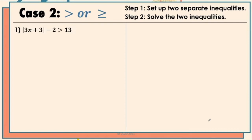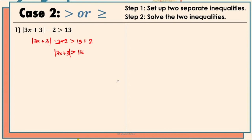Let's have the first example. We have to make sure the absolute value is isolated, so we're going to add positive 2 first on both sides. This gives us the absolute value of 3x plus 3 is greater than positive 15. We're going to use this for our two separate inequalities. The first one uses the less than symbol with 3x plus 3 and the negative number; on the other inequality, we have 3x plus 3 using the opposite symbol and the additive inverse. We'll now solve for the two inequalities separately.